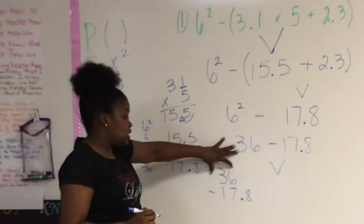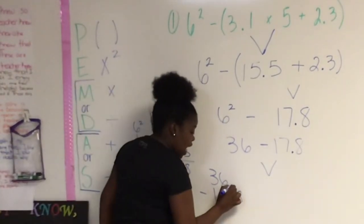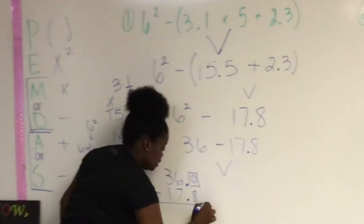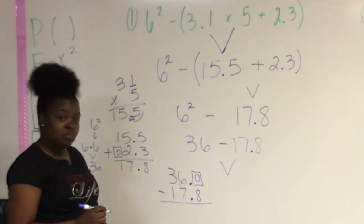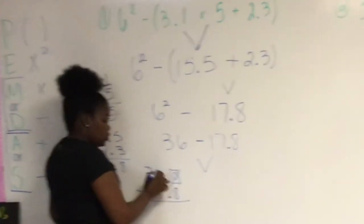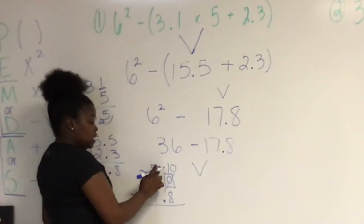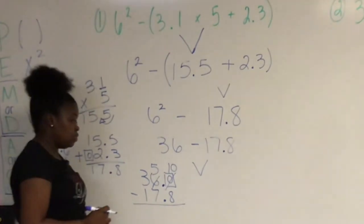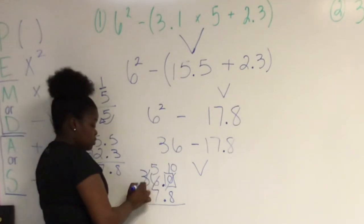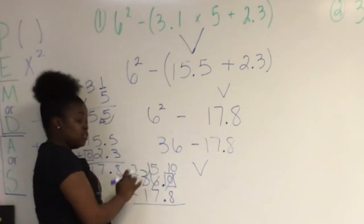Now, I should notice that 36 does not have a decimal. So I need to add a decimal at the end of the number and I need to add a placeholder so that my decimals line up correctly. Now, I cannot take 8 from 0 so I need to regroup. My 0 becomes a 10. My 6 becomes a 5. I cannot take 7 from 5 so I need to regroup again. My 3 becomes a 10. My 3 becomes a 2 and my 5 becomes a 15.